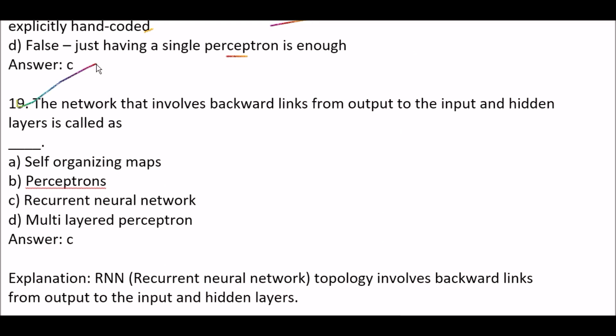Next question: the networks that involve backward links from output to the input and hidden layer are called — Option A: self-organizing maps. Option B: perceptrons. Option C: recurrent neural networks. Option D: multilayered perceptrons. The right answer is option C — recurrent neural networks, because RNN topology involves backward links from output to the input and hidden layers.